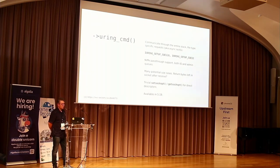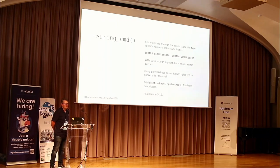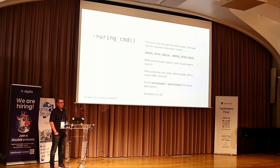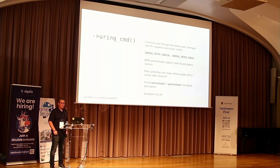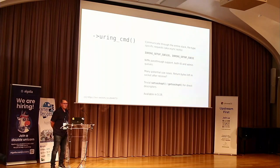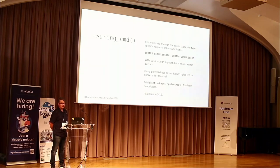Another big addition in 5.19 is Uring Command — a way to plumb private ioctl-like requests through the stack. The initial consumer is NVMe pass-through support. Previously, doing any admin queue or raw IO commands to NVMe required ioctls, which are synchronous. Now you can do any IO command to NVMe asynchronously. There's also potential to use this for other things, like enabling set/getsockopt on direct descriptors. We could also extend completions to tell you not just that there's more data in the socket, but exactly how many bytes remain.